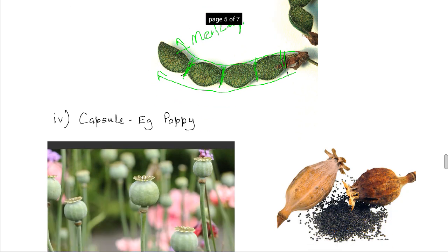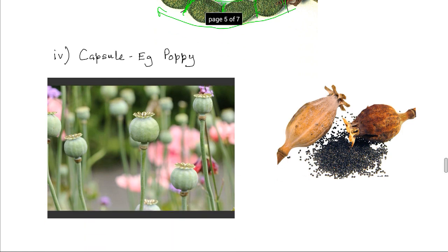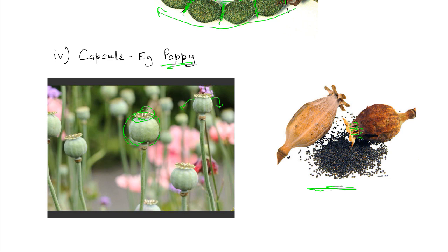Then we have the capsule. A capsule develops from several fused carpels, for example like in the poppy plant. It splits transversely at the top — the capsule splits at the top, releasing seeds. Here you have a photograph of capsules: they have pores at the apex, and these pores split open releasing the many seeds, as for example in the poppy.